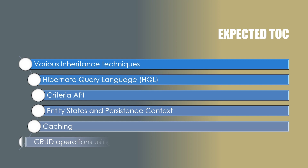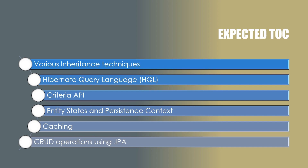At the end, as you know that Hibernate is a JPA implementation making usage of JPA specification. We will try to see that if in future you need to switch from Hibernate to some other ORM provider, what changes you need to make and how you can minimize those changes by using the CRUD methods provided by JPA.